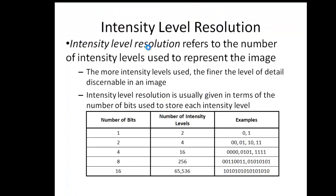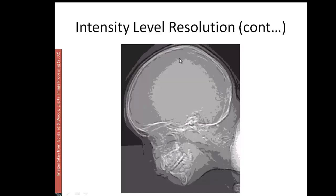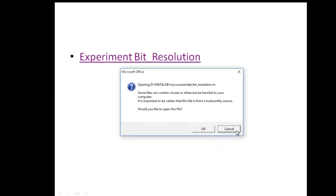Next, intensity level resolution refers to the number of intensity levels used to represent the image. With 1 bit, you have 2 intensity levels — 2^(number of bits). Looking at a 256 grey level image, I can distinguish many shades of grey. As I reduce the intensity level resolution, I can distinguish only a few grey levels, losing image detail, and certain artifacts start appearing.